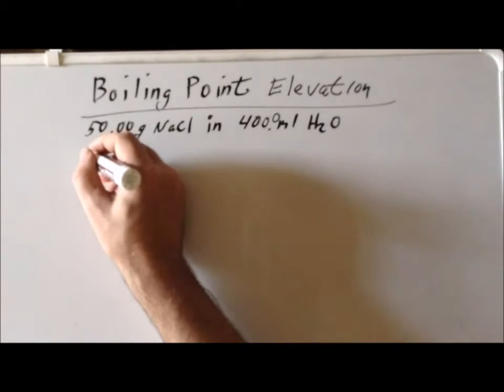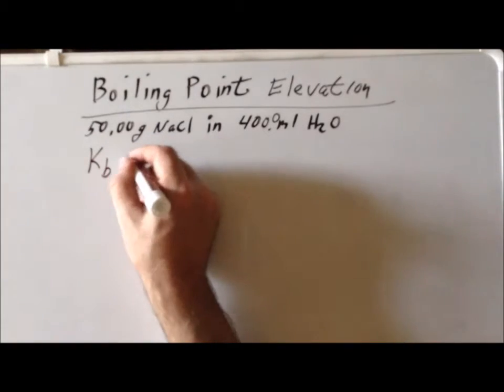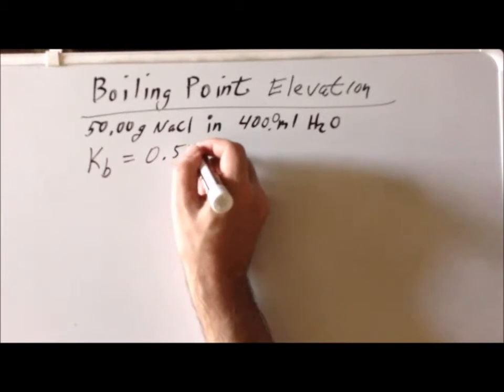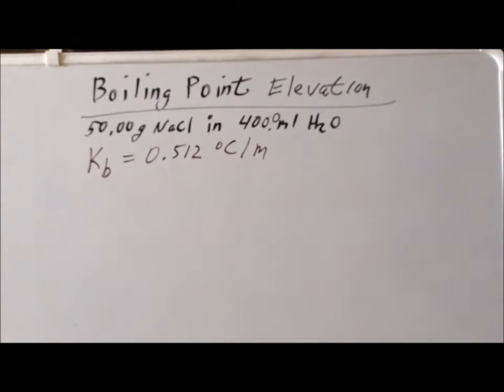We can look in a table of values and find the value of Kb, the boiling point elevation constant, or the ebuloscopic constant. For water, we see that its value is going to be 0.512 degrees Celsius divided by molality. It's important to keep in mind that the boiling point elevation constant refers to the solvent, not the solute. So you want to look in the table for Kb for water, not Kb for sodium chloride.